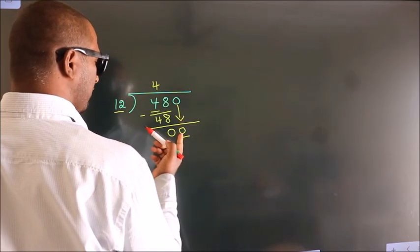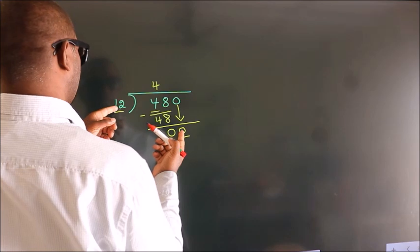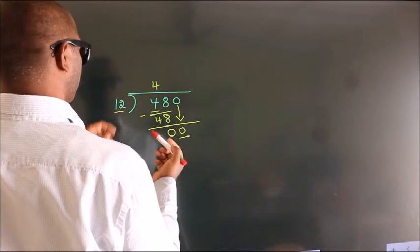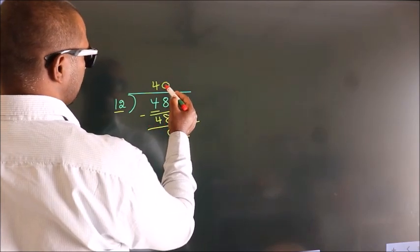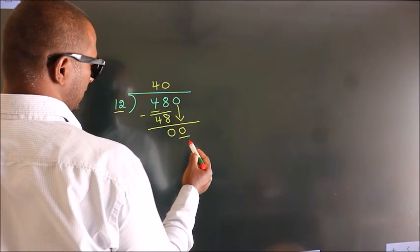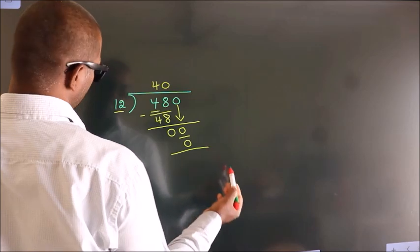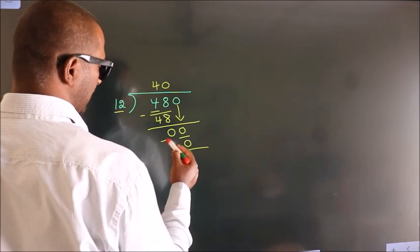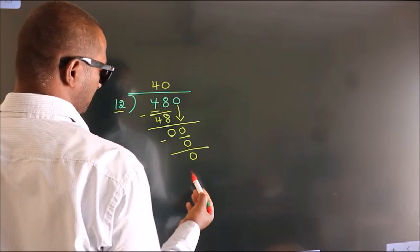When do we get 0? In the 12 table. 12 times 0 is 0. Now we subtract. We get 0.